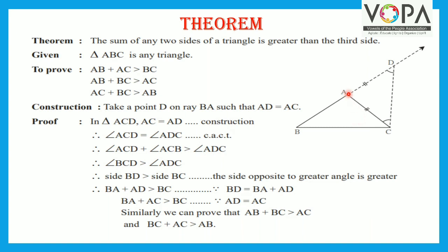Now, in triangle ACD, AC is equal to AD by construction. Therefore, the angles opposite to them are equal: angle ACD is equal to angle ADC, by the isosceles triangle theorem. Therefore, angle ACD plus angle ACB is greater than angle ADC. By the angle addition property, angle ACD plus angle ACB forms angle BCD, so this sum is replaced by angle BCD.